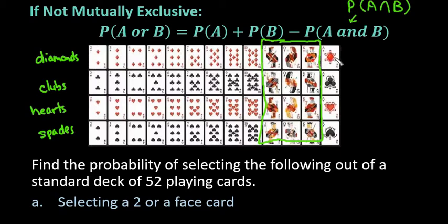The ace can either be considered the high card or the low card, acting as a one, depending on the game you're playing. In some games like poker, it can go with the 10, jack, queen, king, and ace to complete a straight, or it can be used as a one in a straight with ace, two, three, four, and five. Different rules use different values for the ace.